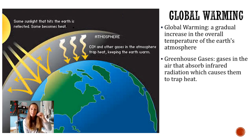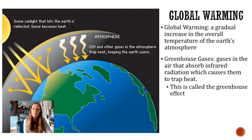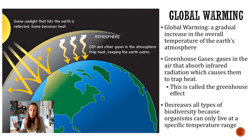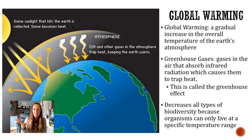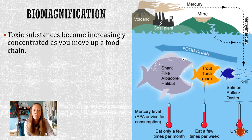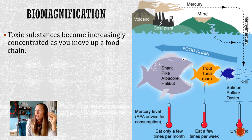Global warming is the fact that the overall temperature on Earth is slowly increasing. It increases because CO2 and other greenhouse gases are trapped in the atmosphere and heat isn't able to radiate out — this is called the greenhouse effect. This causes the Earth's atmosphere to heat up and decreases all types of biodiversity because organisms live in a very specific temperature range. Additionally, it's melting ice caps, causing oceans to rise and taking away land habitats.